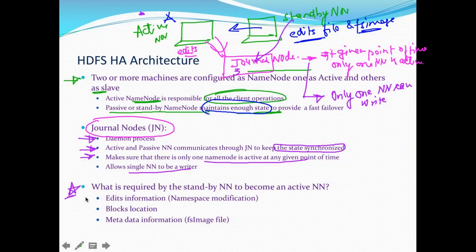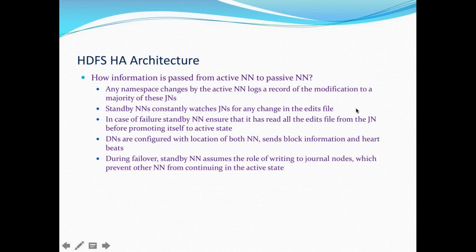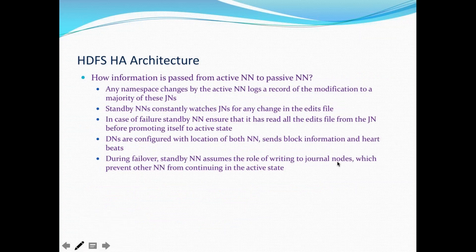What is required by the standby name node to promote itself to active? It requires the edits information and the FSImage information. If the standby name node has these two pieces of information available, then it can promote itself to the active name node. This is how information is passed from the active name node to the passive name node.